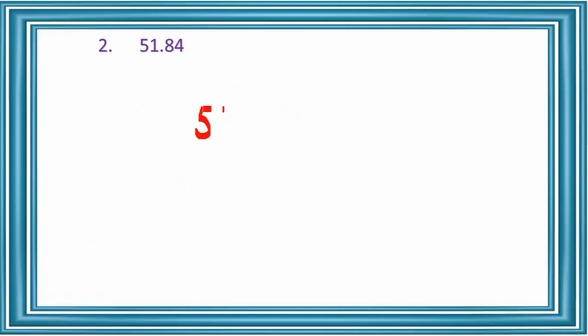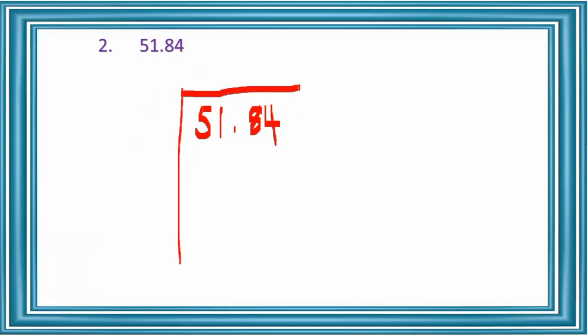Next number is 51.84. We divide it into two groups: the integral part 51 and the decimal part 84. The first group is 51. Since 7×7 = 49 and 8×8 = 64, we write 7 in the quotient place and divisor place. Below 51 we write 49, then 51 minus 49 = 2.